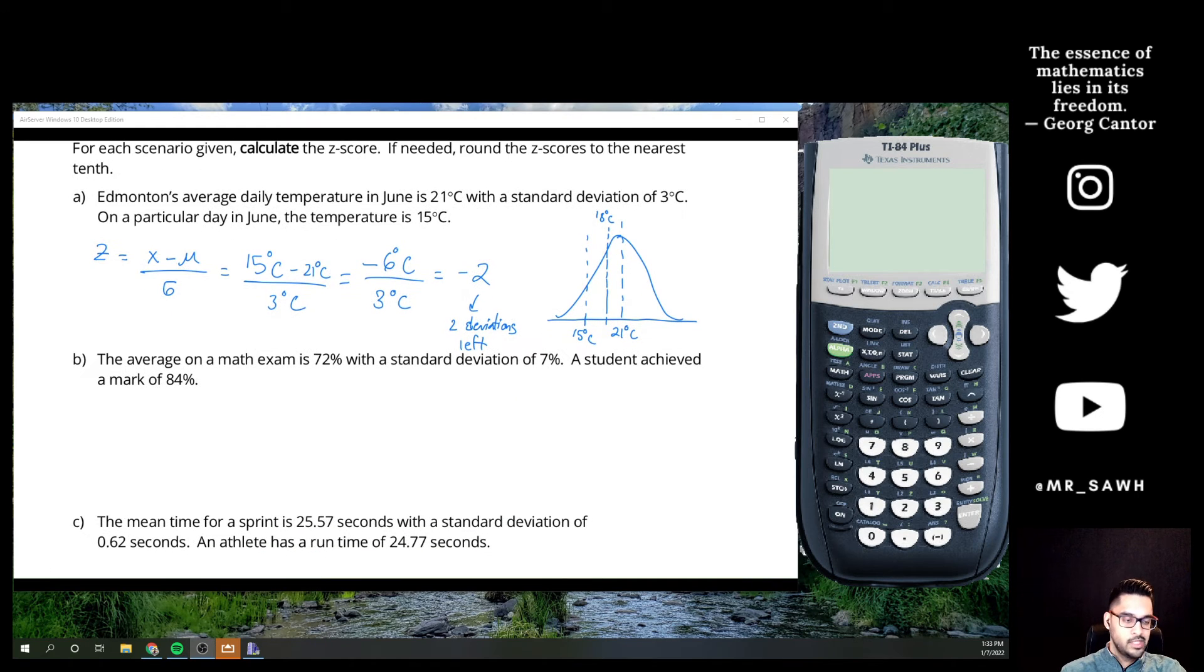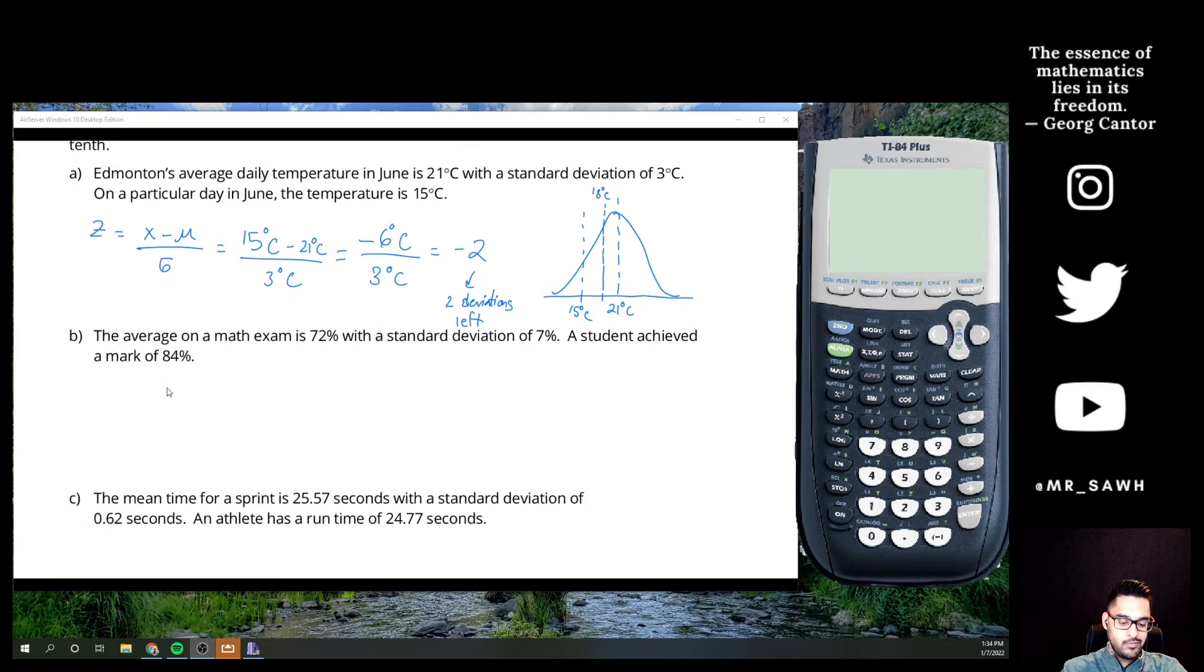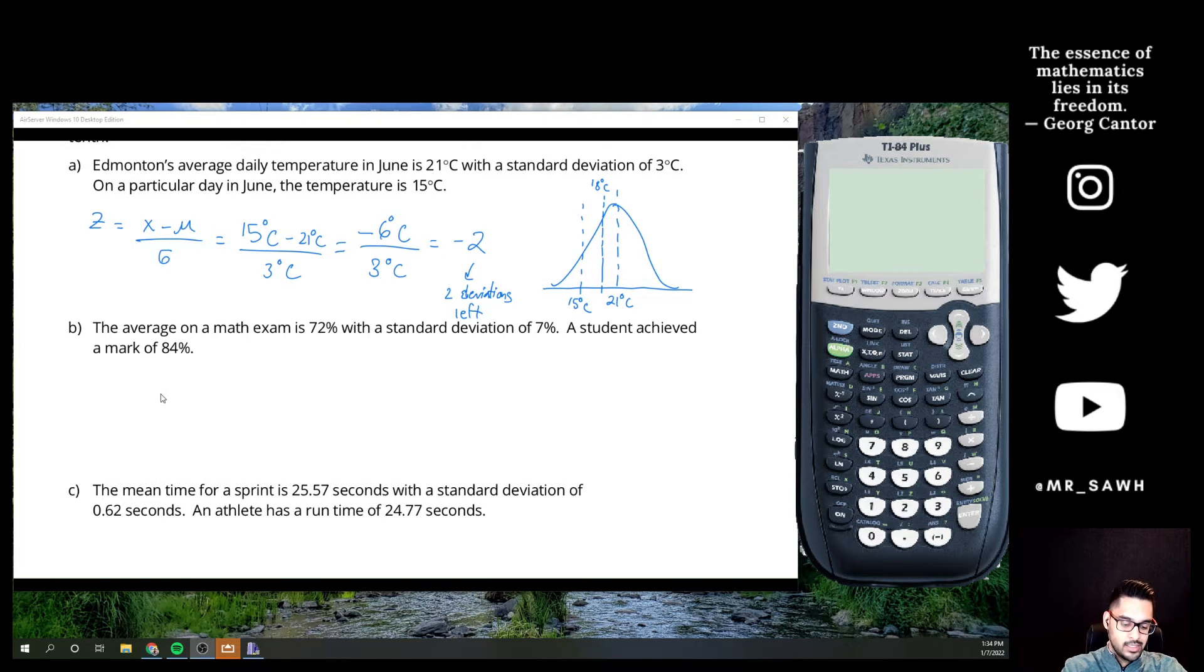And you can think about this again if I do this in terms of an average on a math exam. So the average is 72, standard deviation is 7. A student achieved a mark of 84, so we want to find out how much better they did relative to the rest of the class. So I can use the same formula: x minus the average. x again, just a specific point of data, which this time is 72%. Minus the average—oh wait, sorry. Their mark is 84.